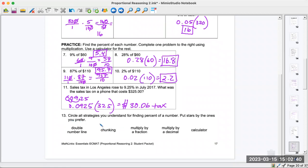Circle all strategies you understand. So this is your job. Do you understand double number line? Chunking? Multiplying by a fraction like here? Multiply by a decimal like here? Or using your calculator? So that's page 17. So you give an indication what you like best. Obviously, most of you will say using a calculator. That's what I'm thinking. And we're stopping here for lesson two. Thank you for participating. Have a good day.